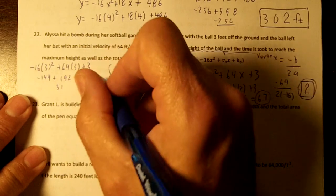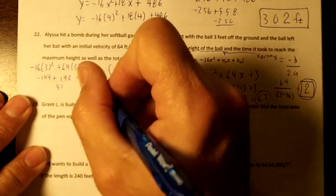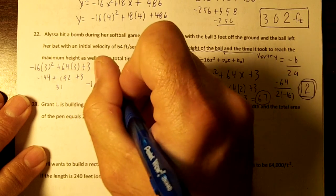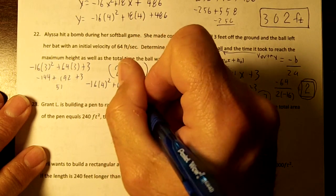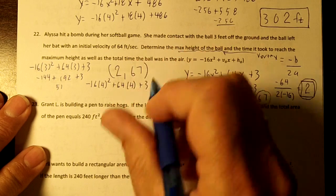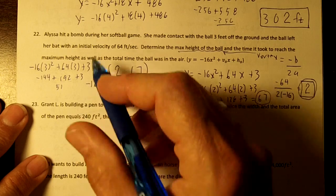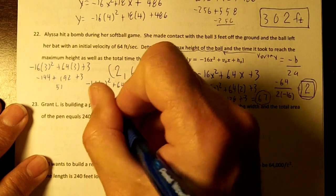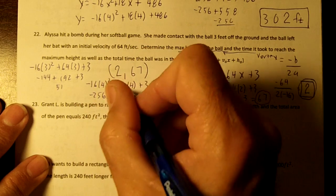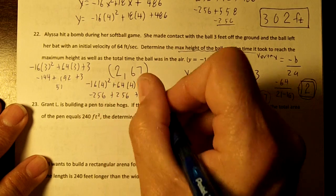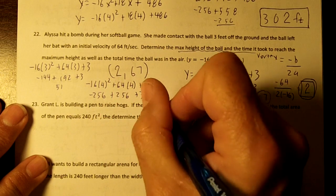What's going to happen at 4 seconds? It's going to hit the ground probably. So let's plug in 4. Negative 16 times 4 squared plus 64 times 4 plus 3. 4 squared is 16, and 16 times 16 is negative 256. 64 times 4 is plus 256 plus 3. So at 4 seconds, the ball is 3 feet in the air.